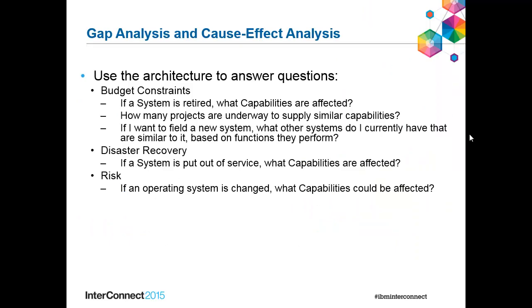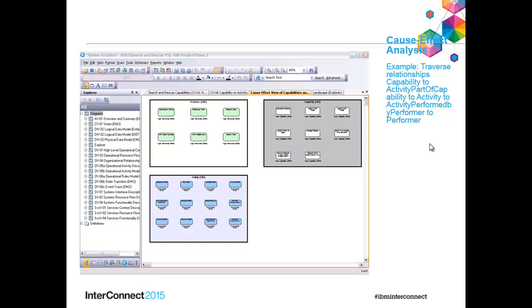So let's take a look at analysis. There are a lot of ways to analyze information in System Architect, the Enterprise Architecture tool, and you're using analysis to answer questions. Some questions on this slide: If a system is retired, what capabilities are affected? How many projects are underway to supply similar capabilities? If I want to field a new system, what are the systems I currently have that are similar based on functions they perform? For disaster recovery, if a system is put out of service, what capabilities are affected — for instance, if it's in a location with high flood zone risk? If an operating system has changed, what capabilities could be affected? You can write and run reports to analyze this information.